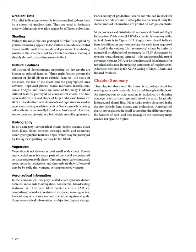Chapter Summary. This chapter discussed the basic terminology used for reading maps and charts, which are used throughout the book. An introduction to map reading is explained by defining concepts such as the shape and size of the earth, longitude, latitude, and rhumb line. Other major topics discussed include time, charts, and projections. Aeronautical charts are explained in detail, discussing the different types, the features of each, and how to acquire the necessary maps needed for specific flights.